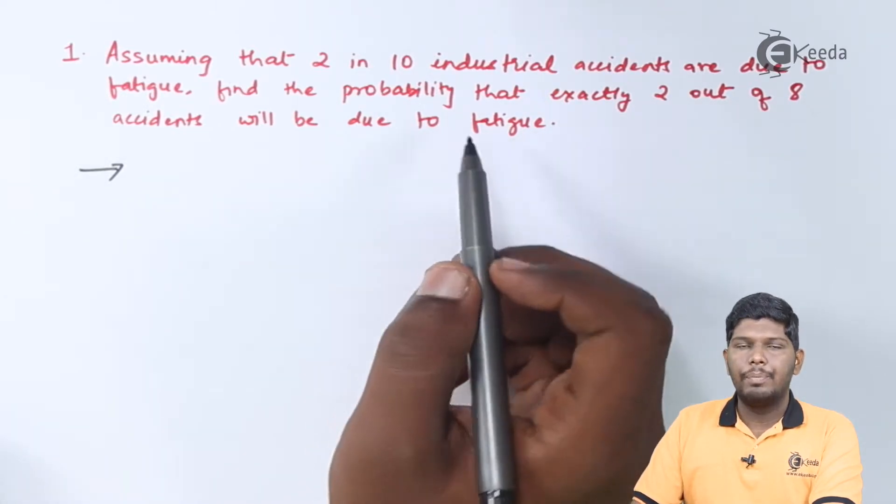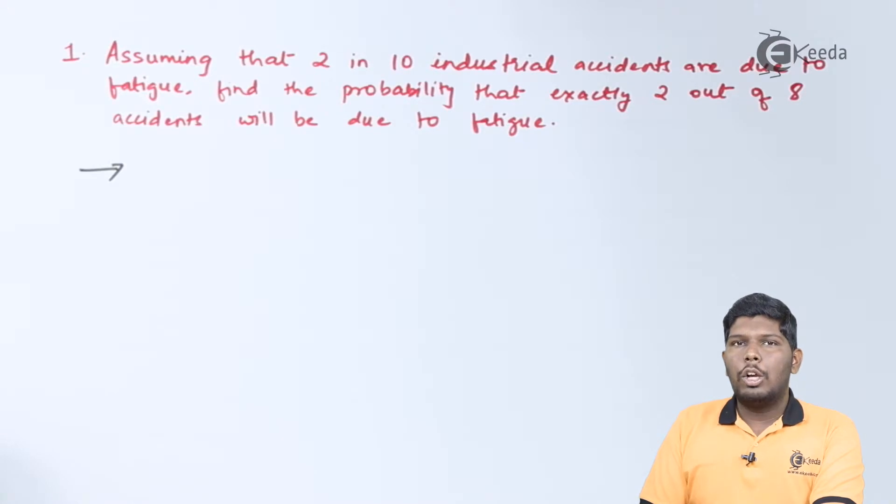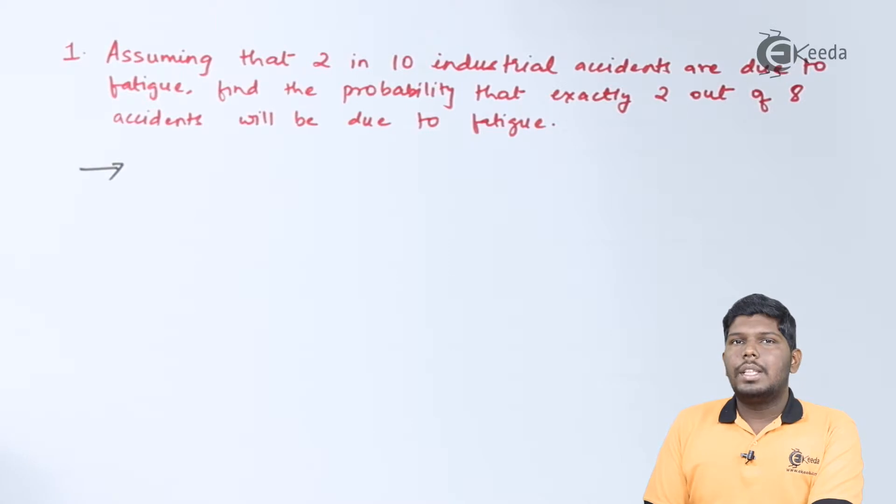When to use binomial distribution? Whenever we have two outcomes, like success or failure, we can use the formula for binomial distribution which says probability P(X = r) equals nCr times p raised to r times (1 - p) raised to (n - r).